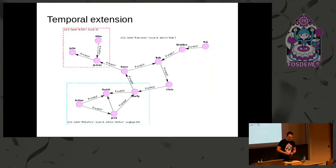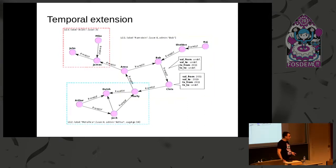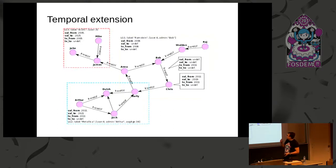The third extension to the property graph model is our temporal extension. Our approach to handle over time evolving graphs is to add bitemporal attributes to all elements of our graph model: to nodes, to edges, and to logical graphs as well. We distinguish between two types of temporal attributes. First, valid time, which is a user-defined property. You can decide what data you want to store in there.